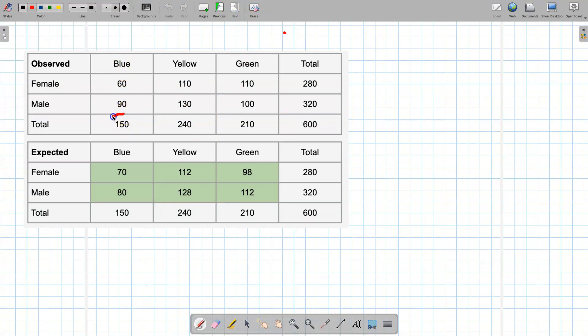From the observed data we've got this 150 here and this 280 here and the 600 here. To get this value here of 70, what I do is I take 150 and multiply it by 280, and then we divide the whole thing by 600 and you will get 70, which is in there.